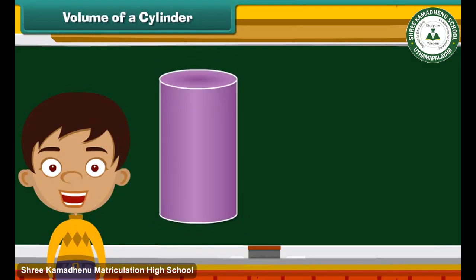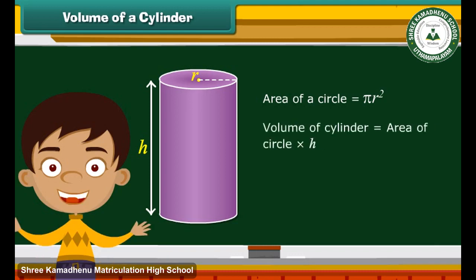A solid that has the shape of an ordinary tin can or a drum is a cylinder. The two bases of a cylinder are circular in shape. We know area of a circle is equal to pi R square. For calculating volume, we will multiply area of a circle with the height. So, the volume of cylinder is equal to pi R square into H.